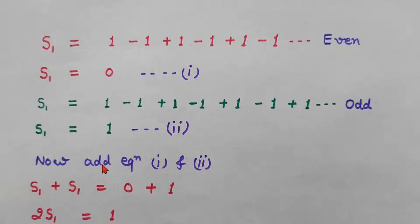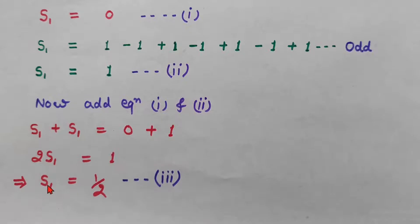Now what I am going to do is I will add equation 1 and 2. So on adding the left hand side, S1 plus S1, it will be 2S1. And on the right hand side, we have 0 and 1. So 0 plus 1 is 1. So S1 is equals to half. Call this as third equation.